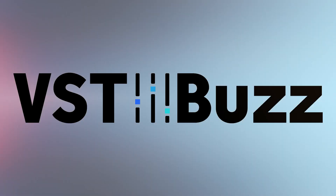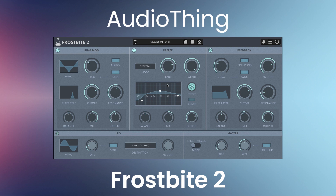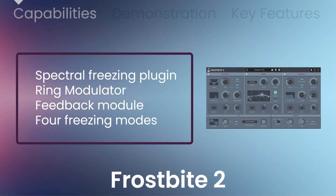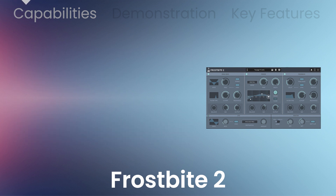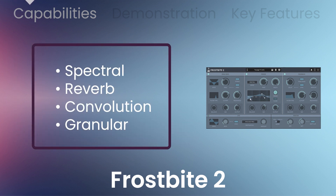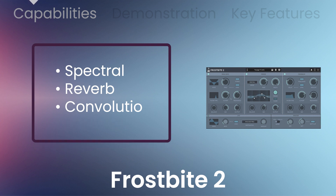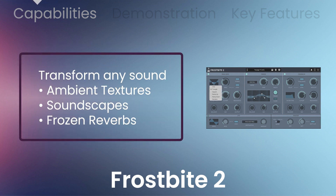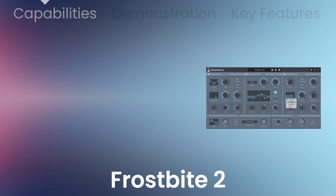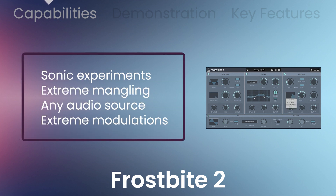VST Buzz presents 55% off Frostbite 2 by Audio Thing, a spectral freezing plug-in with a ring modulator and a feedback module. With four freezing modes — spectral reverb, convolution, and granular — you can transform any sound into ambient textures, soundscapes, or frozen reverbs. Frostbite 2 can also be used for extreme sonic experiments by entirely mangling any source with extreme modulations.